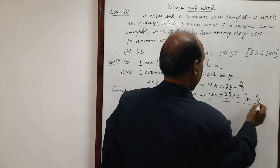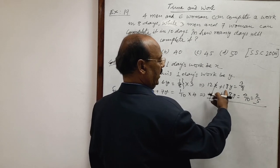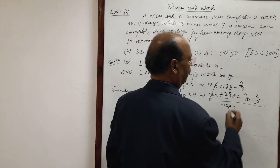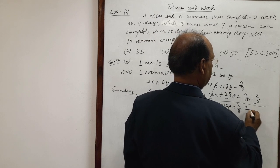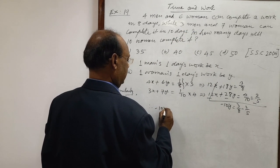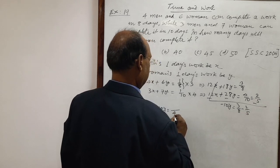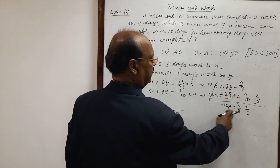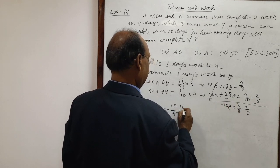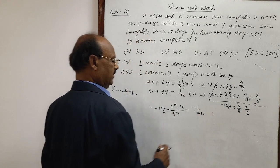Now subtracting these two equations. Here 12x will be cancelled out. 18y minus 28y means minus 10y is equal to three by eight minus two by five. We are getting here minus 10y is equal to, let us simplify it. LCM is eight into five is forty. Five three is fifteen minus eight two is sixteen, so this is equal to minus one by forty.